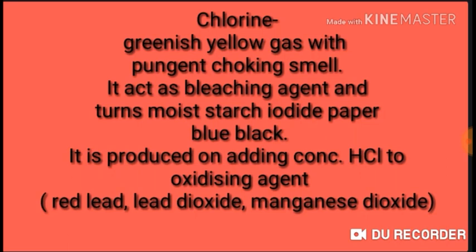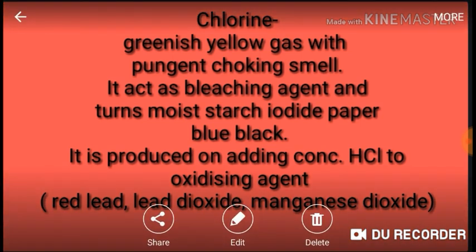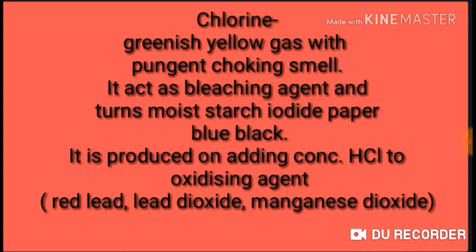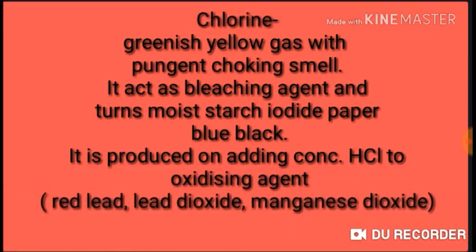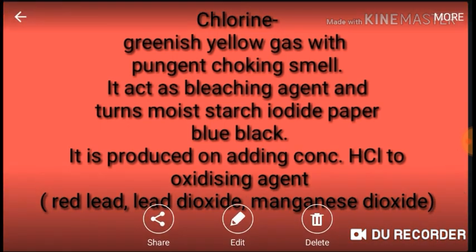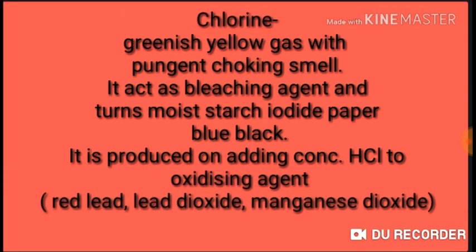Now the next gas is chlorine. This gas is greenish yellow with a pungent, choking smell. It also acts as a bleaching agent and it turns moist starch iodide paper blue-black. It is produced on adding concentrated HCl to an oxidizing agent like red lead, lead dioxide, or manganese dioxide. A typical question: Name the gas which is released when concentrated HCl is added to lead dioxide. The answer will be chlorine.